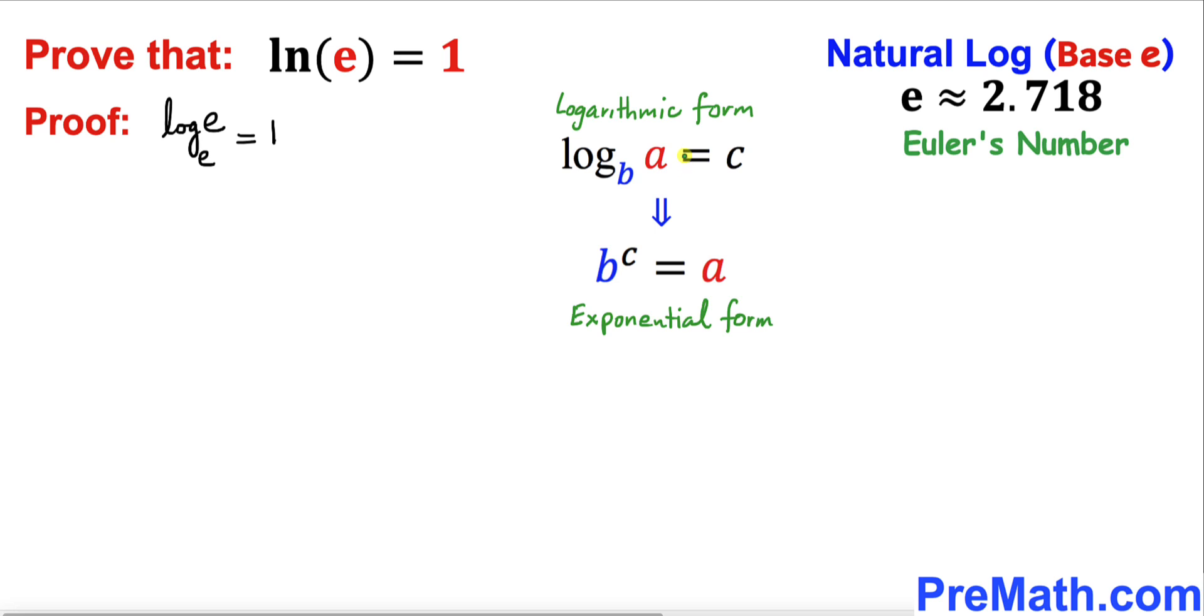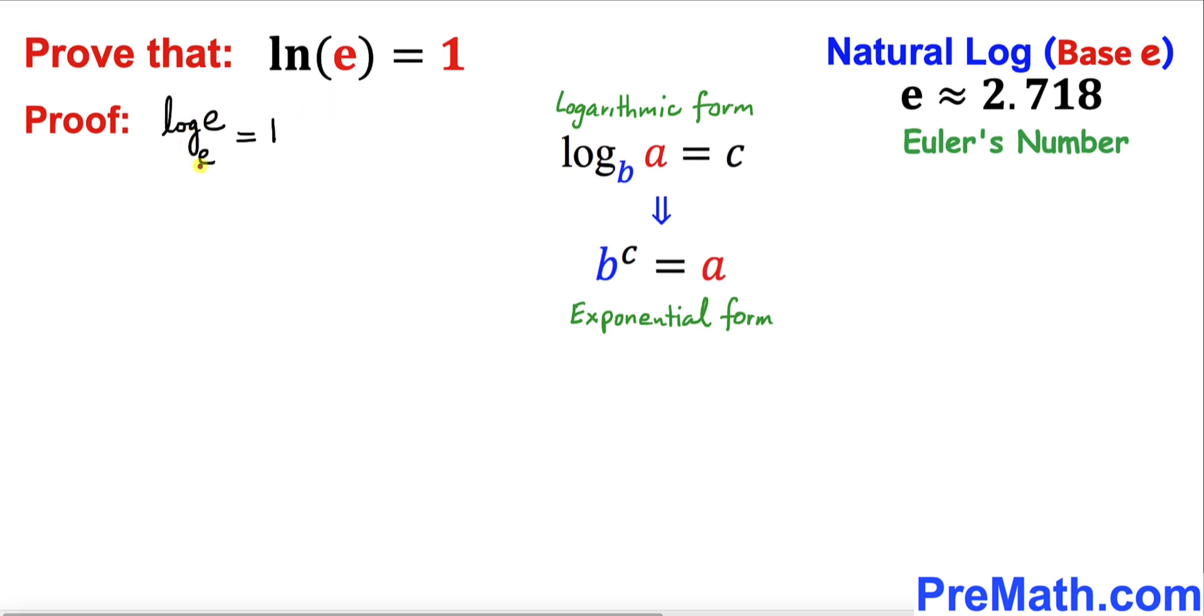Now let's recall this conversion rule from logarithmic form to exponential form we are going to apply in this proof. So we can use this rule: this base e to the power of 1 must be equal to this e.